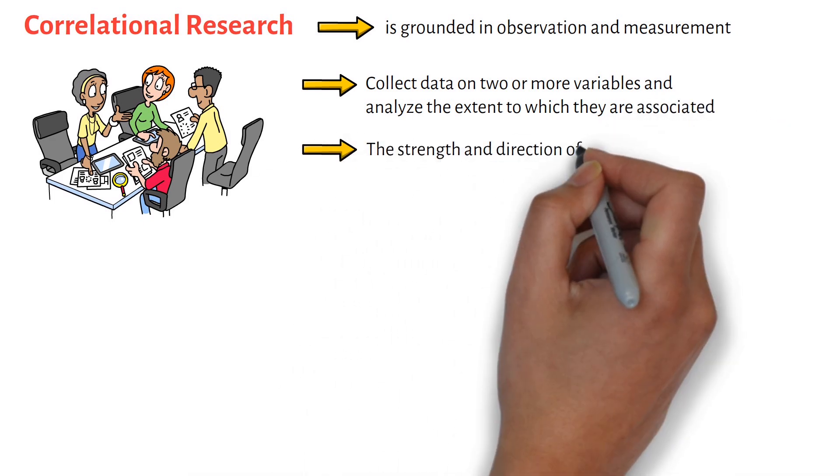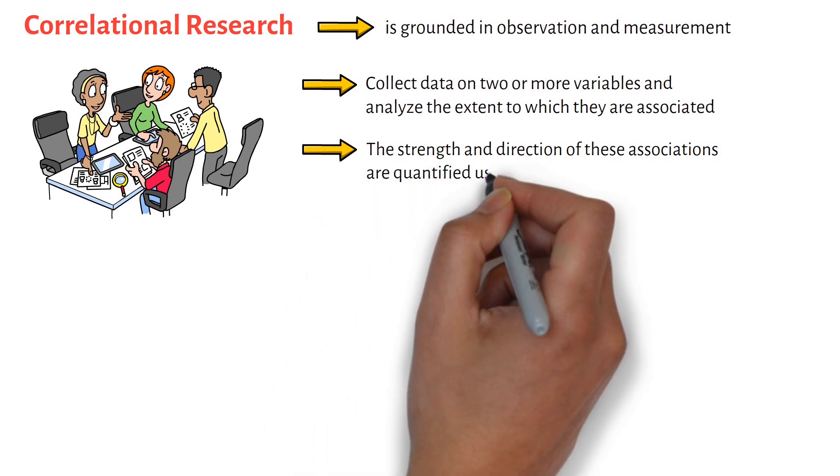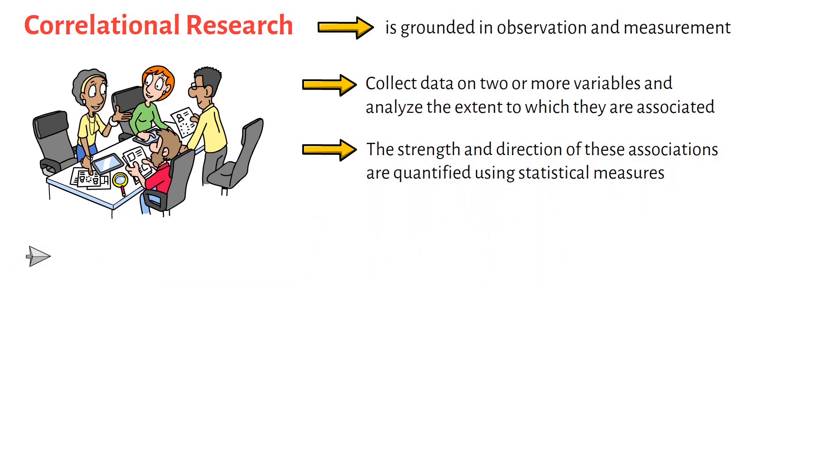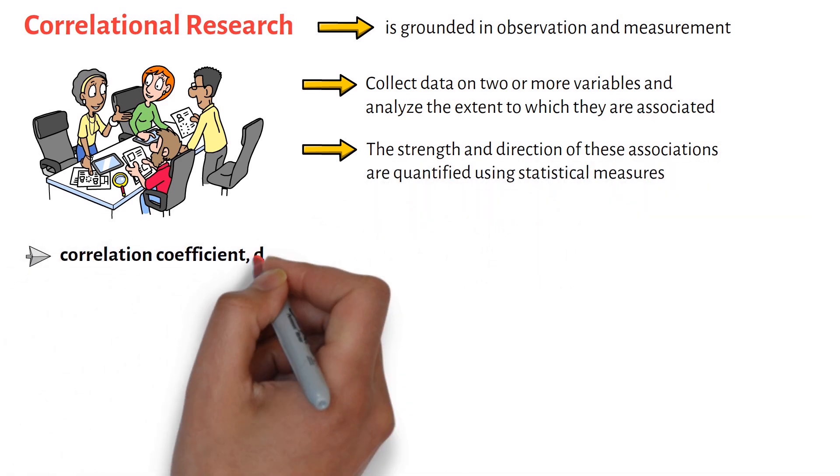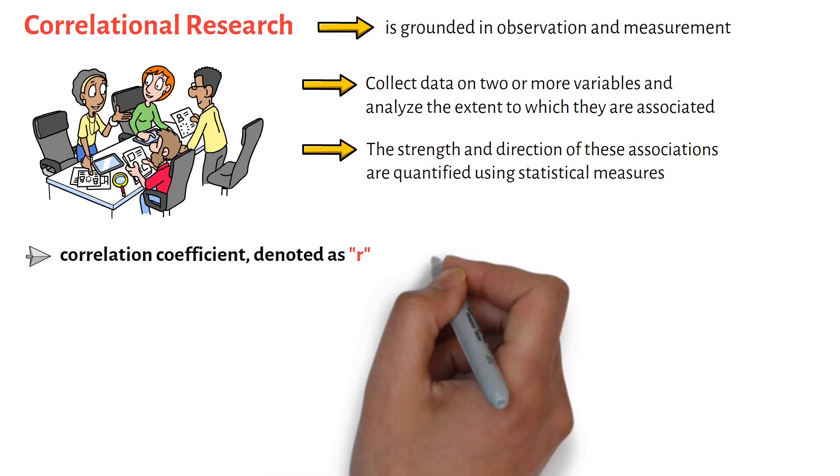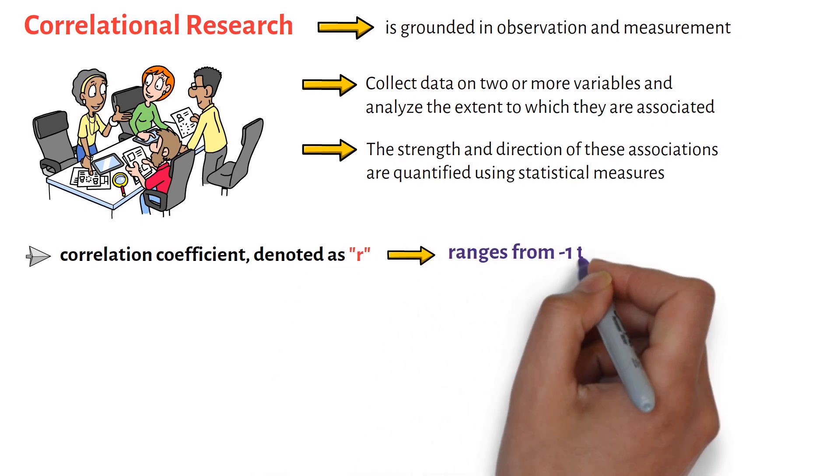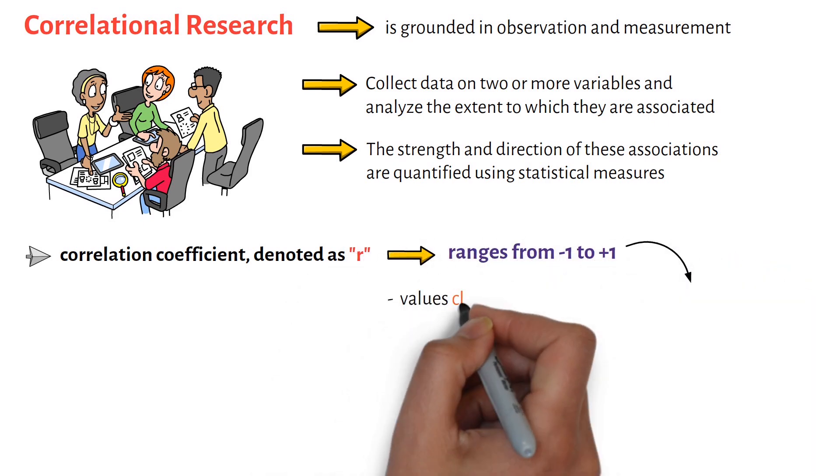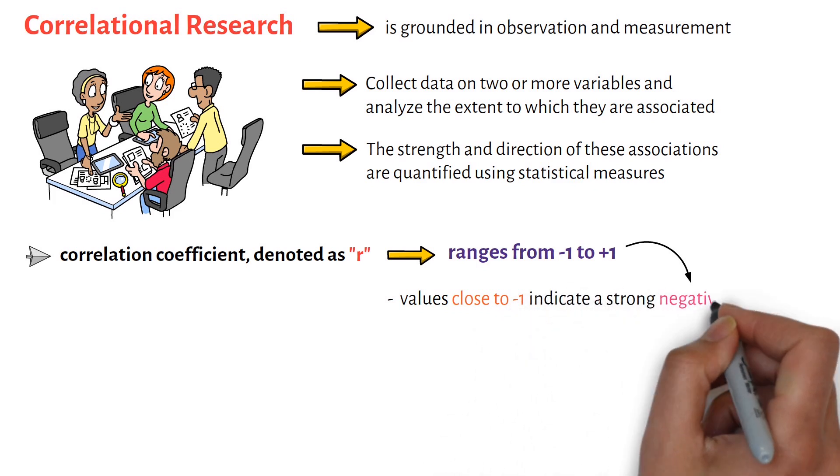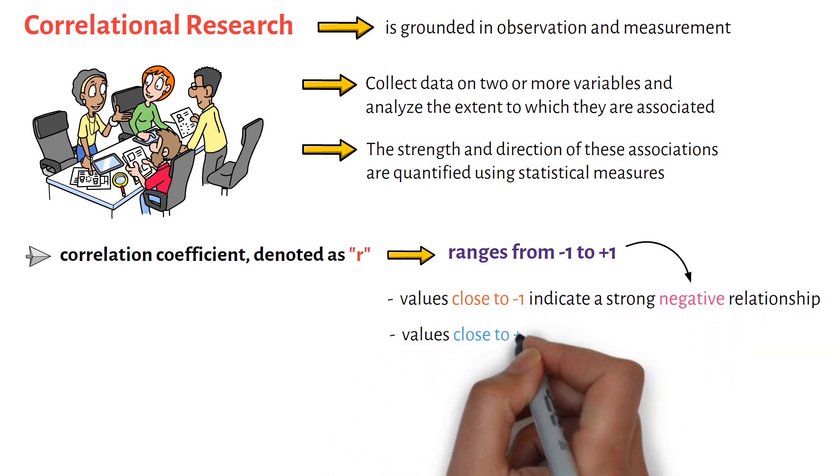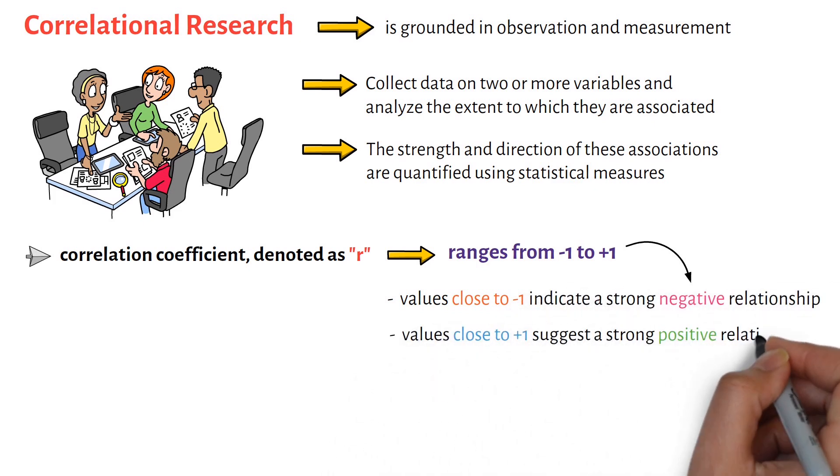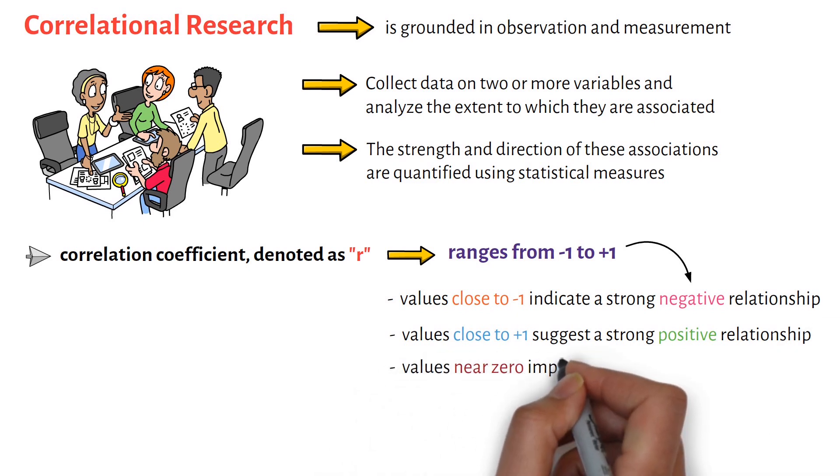The strength and direction of these associations are quantified using statistical measures such as the correlation coefficient, denoted as r. This coefficient ranges from -1 to +1, where values close to -1 indicate a strong negative relationship, values close to +1 suggest a strong positive relationship, and values near 0 imply little or no relationship.